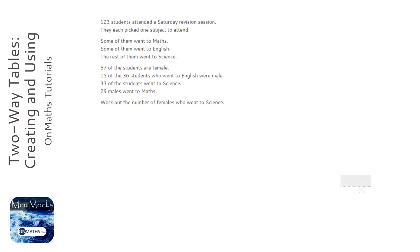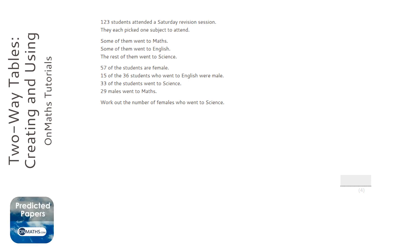This question looks a little bit complicated, in fact very complicated. But whenever you have this type of question where you've got different categories of people or items, the best method and the clearest method is to draw a quick two-way table, which I'm going to do now.